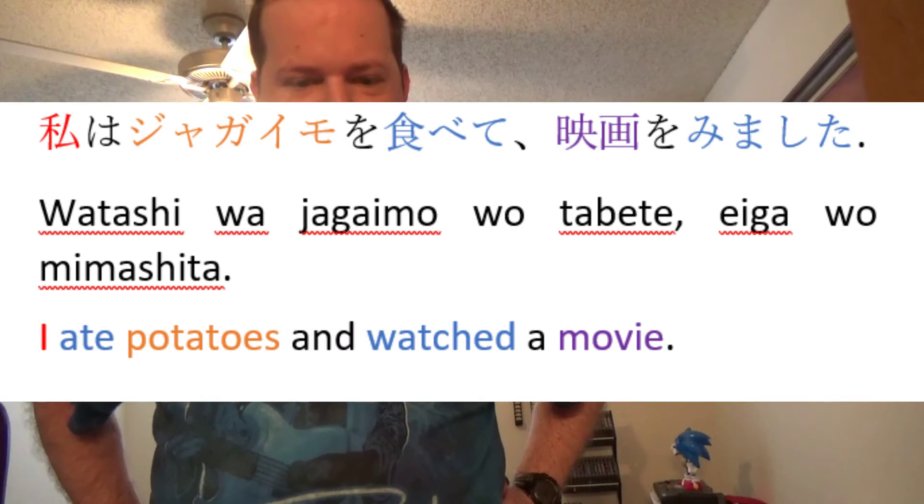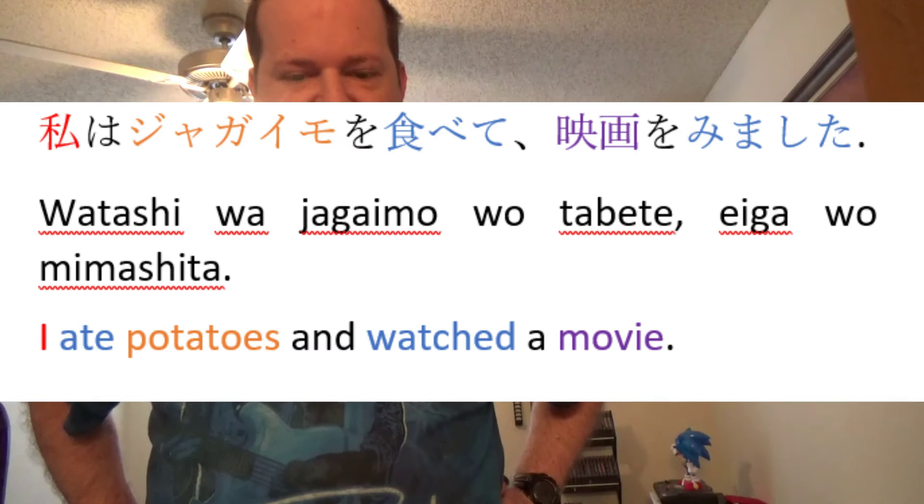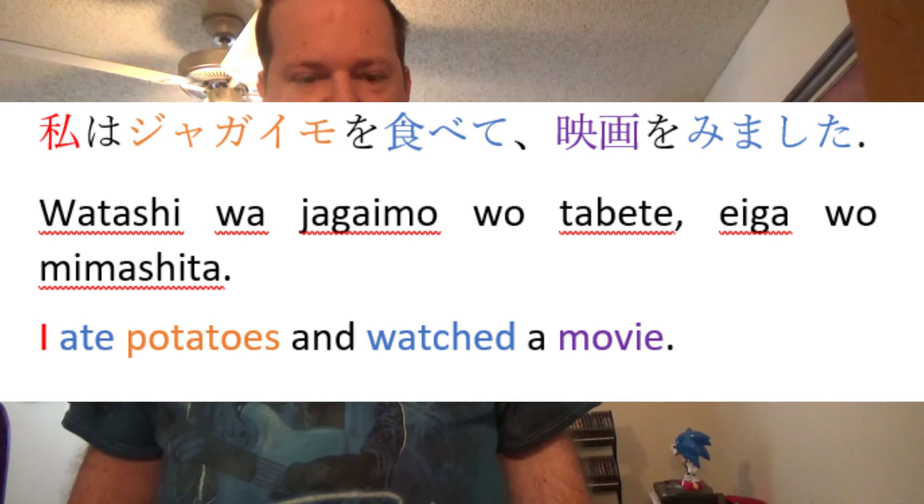You can use the te-form to connect multiple verbs too. To do this, you conjugate the first verb as the te-form and the second verb normally. For instance, you can say watashi wa jagaimo wo tabete eiga wo mimashita, which means I ate potatoes and watched a movie. Note that you use the te-form for the first verb regardless of whether it's past, present, or future tense. The conjugation of the second verb lets the listener know what tense the sentence is in.